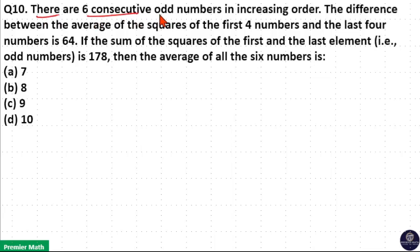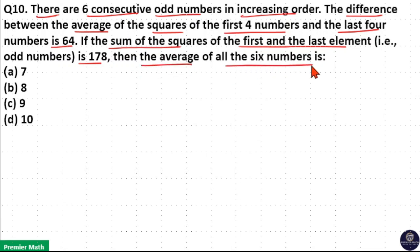There are six consecutive odd numbers in increasing order. The difference between the average of the squares of first four numbers and the last four numbers is 64. If the sum of squares of first and the last element is 178, then the average of all the six numbers is.